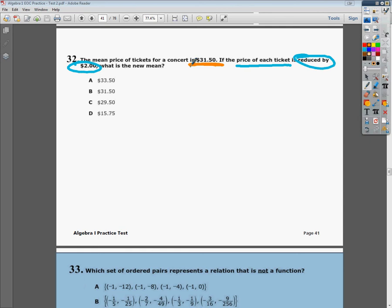Well, if we change everybody, and we reduce every single ticket possible out there by $2, then that means our mean is going to have to drop by $2.